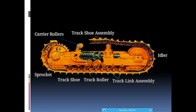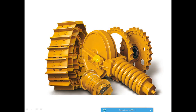Here is the recoil spring assembly. The recoil spring assembly is used to increase or decrease the tension of the track chain. This is the track chain, and here you can also see the sprocket.